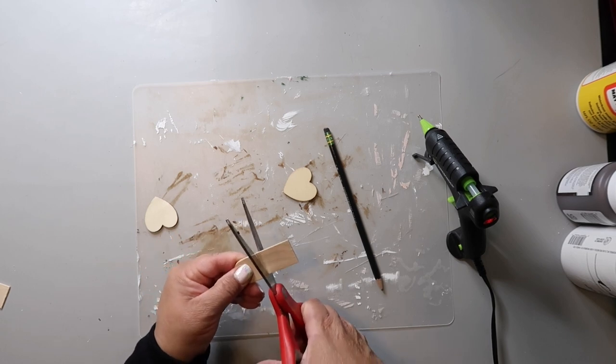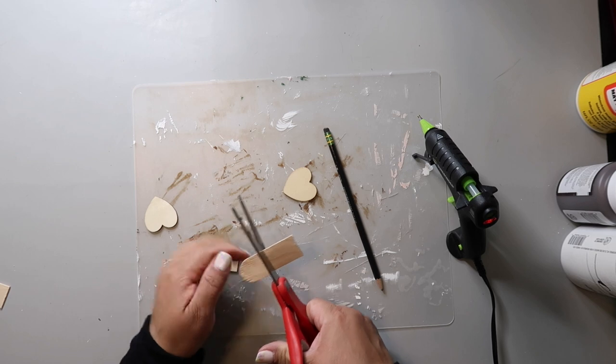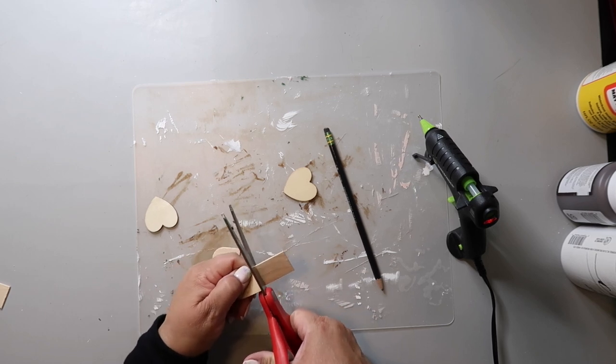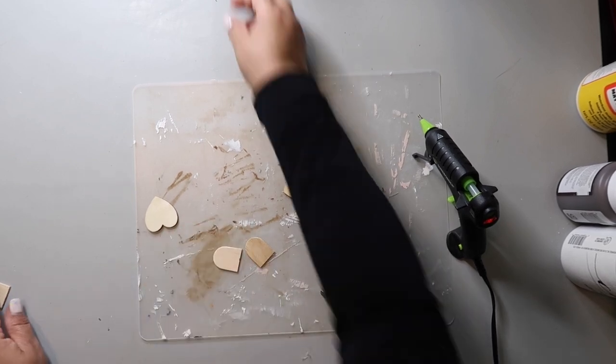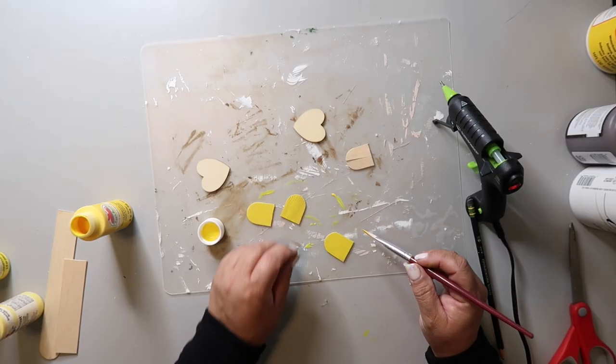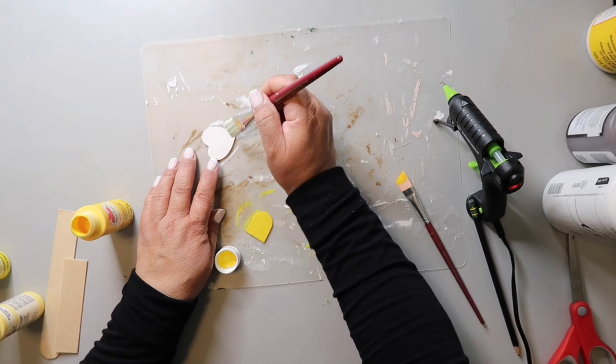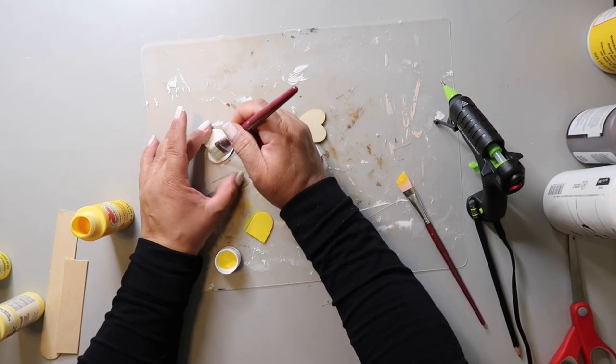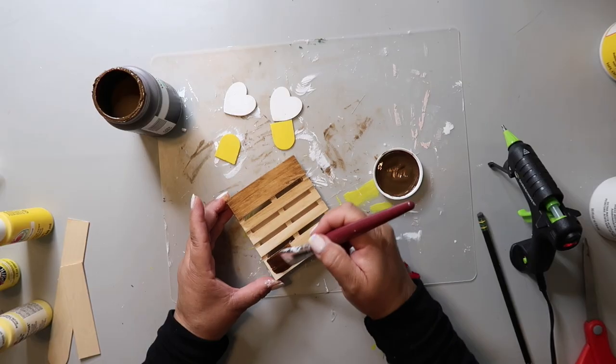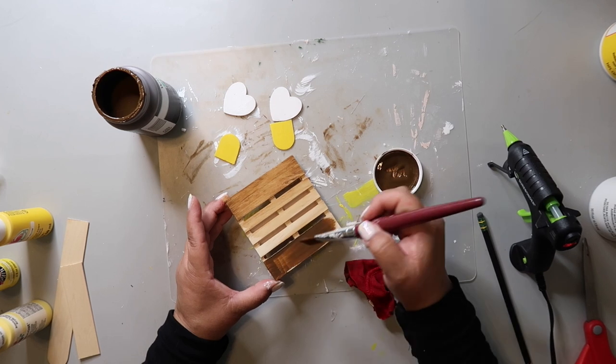This is DIY number four and I'm already going to spoil it for you and tell you it turned out cute. So I'm taking a large craft or popsicle stick and I'm cutting it down and this is going to be the body of the bee. I painted the craft stick pieces yellow. I took hearts that I got from the his and her section of Hobby Lobby and I'm just painting them white.